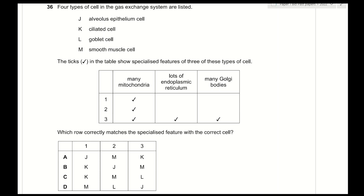Question 36: four cell types in the gas exchange system are listed. Cell type 3 contains many mitochondria, extensive endoplasmic reticulum, and many Golgi bodies — indicating a high rate of protein secretion. This matches a goblet cell, which secretes large amounts of mucus. Since cell types 1 and 2 show identical features with no distinguishing difference, knowing cell 3 is a goblet cell (L) narrows it to answer C.